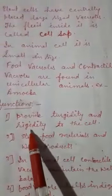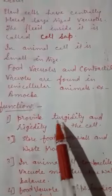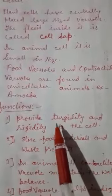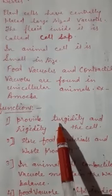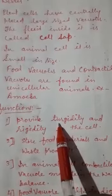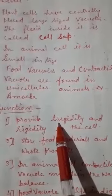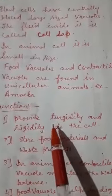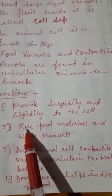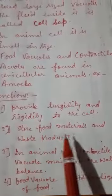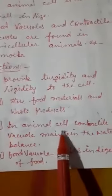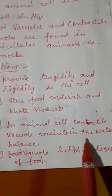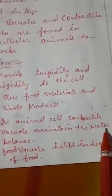The functions of vacuoles are: first, they provide turgidity and rigidity to the cell — turgidity refers to the amount of water which provides strength to the cell. Second, they store food materials and waste products.